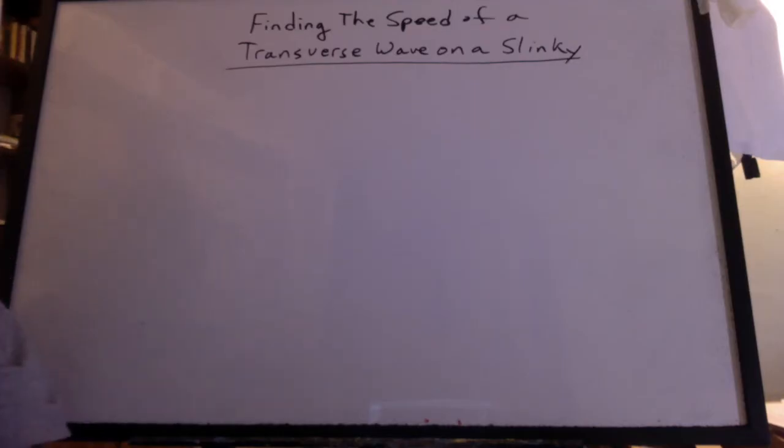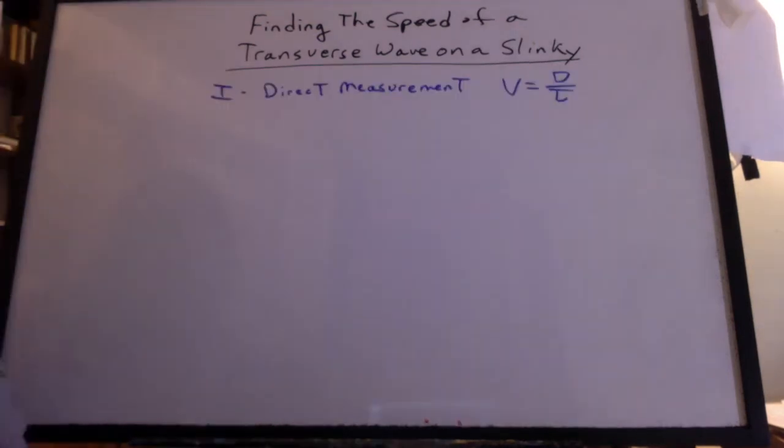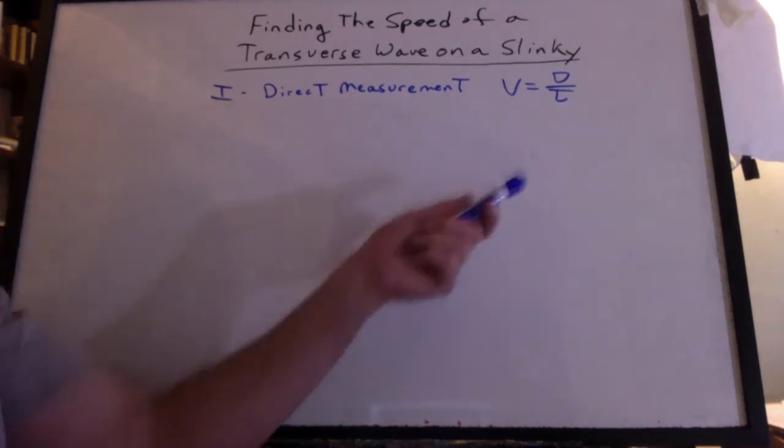So we're finding the speed of a transverse wave on a slinky. We've got three different ways. The easiest is the direct measurement. Velocity is distance over time. Keep track of how many times the wave went back and forth.